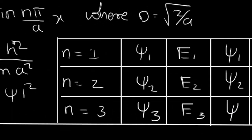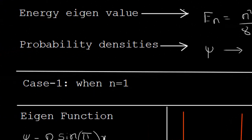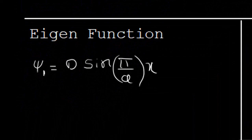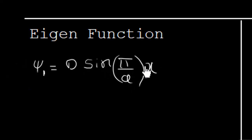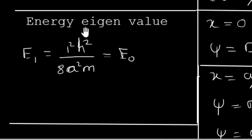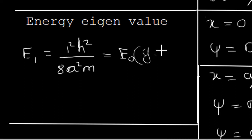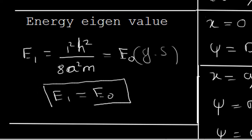Let's see case number one, when n equals 1. The eigenfunction is ψ₁ = D sin(π/a · x). Now let us find the energy eigenvalue E₁ = (1²·h²)/(8ma²) = E₀, where E₀ is the ground state energy. So the minimum ground state energy is E₁, which we denote as E₀.